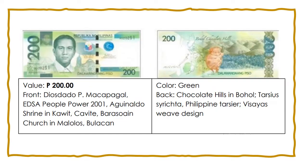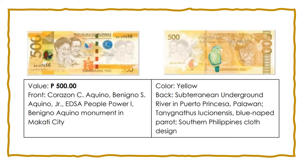On the 200-peso bill, in front is Diosdado P. Macapagal, the EDSA People Power in 2001, the Aguinaldo Shrine in Kawit Cavite, and Barasoain Church in Bulacan. Its color is green. At the back, you would see the famous Chocolate Hills in Bohol, the Tarsier, and the Visayas Weave design. On the 500-peso bill, in front are Corazon C. Aquino, Benigno S. Aquino Jr., the EDSA People Power 1, and the Benigno Aquino Monument in Makati City. Its color is yellow. At the back is the Subterranean Underground River in Puerto Princesa, Palawan, the Blue-Naped Parrot, and the Southern Philippine cloth design.